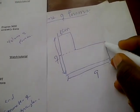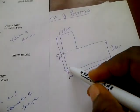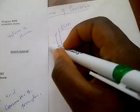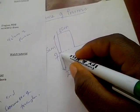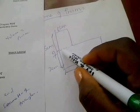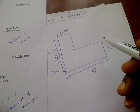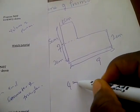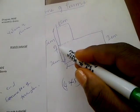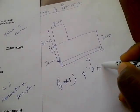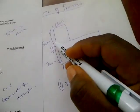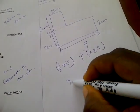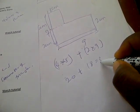Since the full width is 7 and one portion is 2 centimeters, the remaining width is 5 centimeters. The remaining height portion is also 2 centimeters. We divide the shape into two rectangles: the first is 4 times 5, and the second is 2 times 9. So the area is 4 times 5 equals 20, plus 2 times 9 equals 18, giving a total of 38.